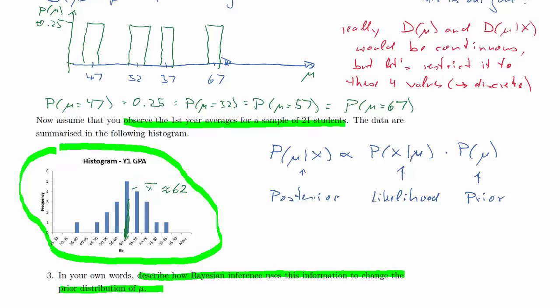Now given we have a discrete distribution with 4 possible values for mu only, we will have to evaluate this at 4 possible values only. Now that's convenient, really you should evaluate it at an infinite number of possible values. So we said previously, the prior for each of them is 0.25. So let's look at the likelihood here.